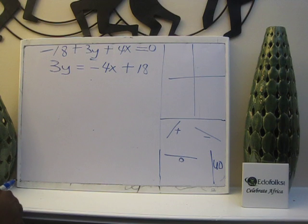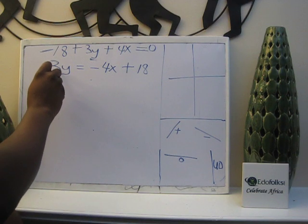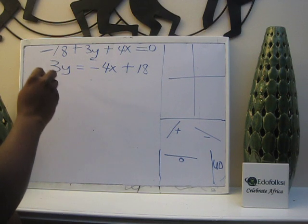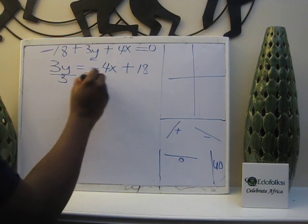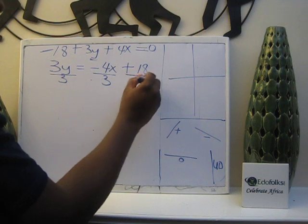Now I'm ready to go. I want y by itself. So I'm going to divide everything by 3. This is a multiplication. To get y by itself, I must divide by 3. So I'm going to divide this by 3, divide this by 3, and divide this by 3.